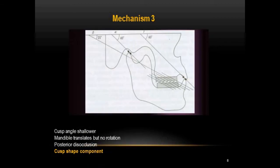In mechanism three, the anterior guidance and condylar guidance are parallel to each other, but the cusp angle is much shallower. In this situation, the mandible translates without rotation, but there is posterior disclusion. This demonstrates how important the cusp angle factor is. The component of disclusion that occurs when the cusp angle is shallower is called the cusp shape component.